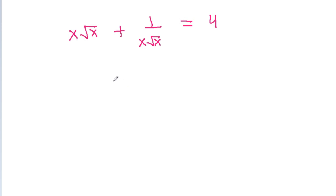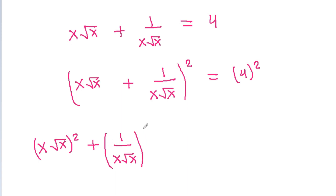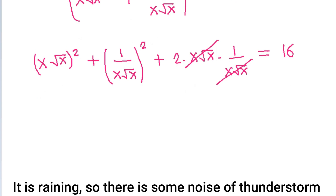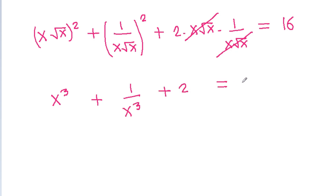If we square both sides, then (x√x plus 1 by x√x) squared is equal to 4 squared, which is 16. Expanding, (x√x) squared plus (1 by x√x) squared plus 2 times x√x times 1 by x√x equals 16. The x√x terms cancel, giving (x√x plus 1 by x√x) squared plus 2 equals 16, so x cube plus 1 by x cube equals 14.